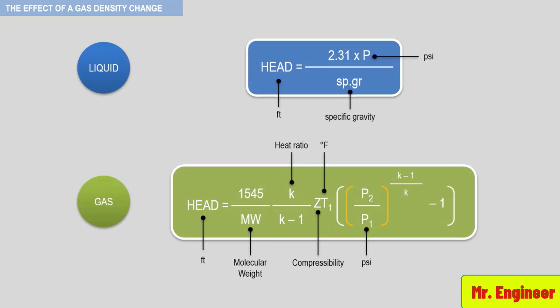Note how much the density of the fluid influences the amount of energy required to meet a certain process requirement. When you consider that the additional amount of head produced as the flow rate of the centrifugal compressor decreases from rated point to surge point is on the order of only 10%, you can see that a small change in the gas density can result in a significant flow reduction and possibly a compressor surge.